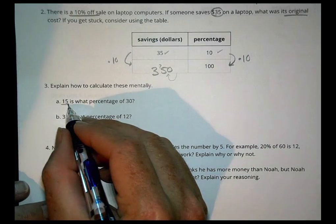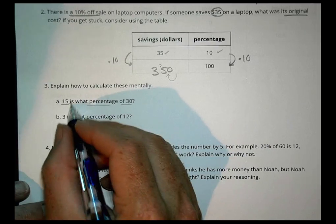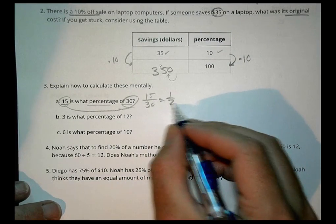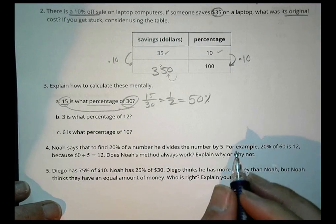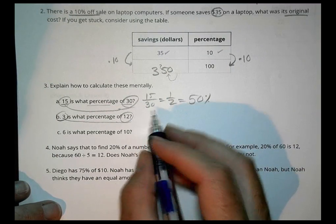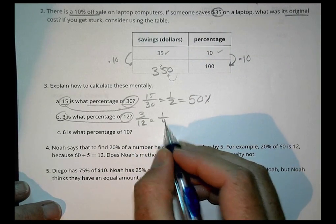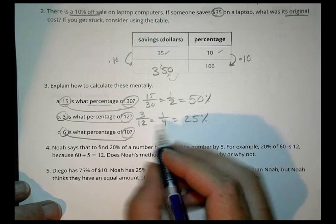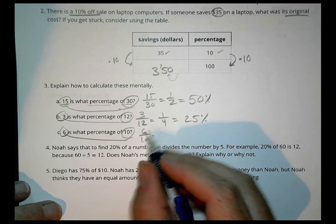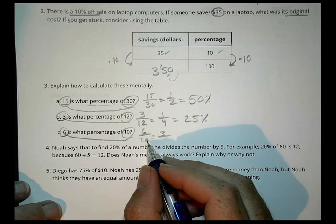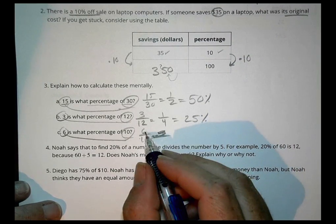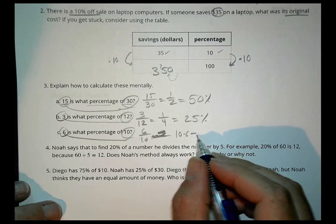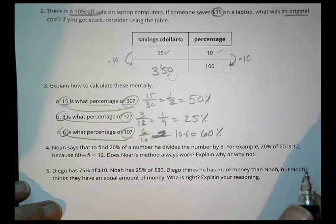Number 3. How would you calculate these mentally? 15 is what percentage of 30? Well, 15 we know is half of 30. 15 out of 30 is half. Now, half is always equal to 50%. 3 is what percentage of 12? 3 out of 12 is the same as 1 out of 4 which is one of our benchmark ones, 25%. And then finally, 6 out of 10. 6 out of 10, let's leave it 6 tenths. Because we know that 1 tenth is 10%, and we have 6 of them so 10 times 6 is 60%.